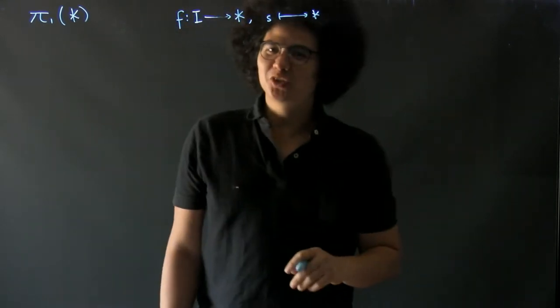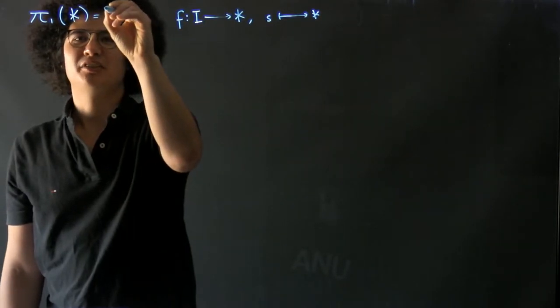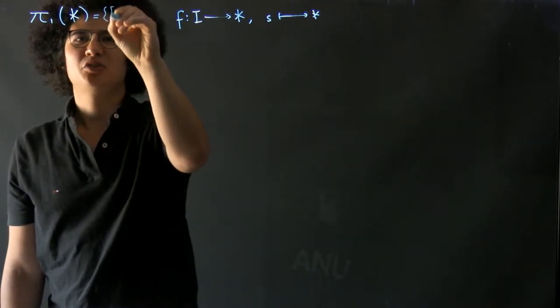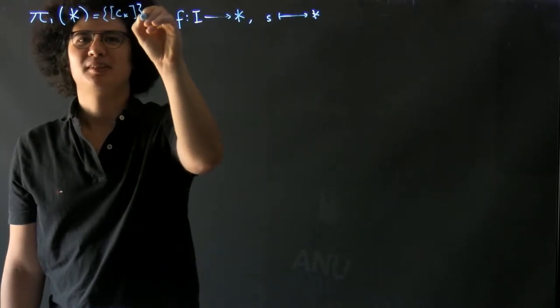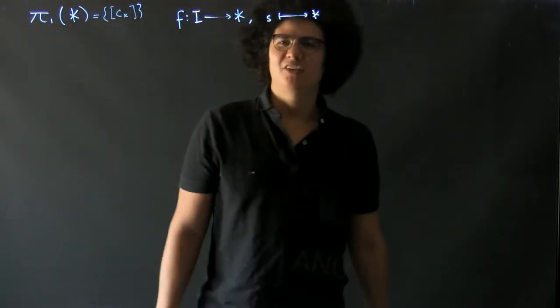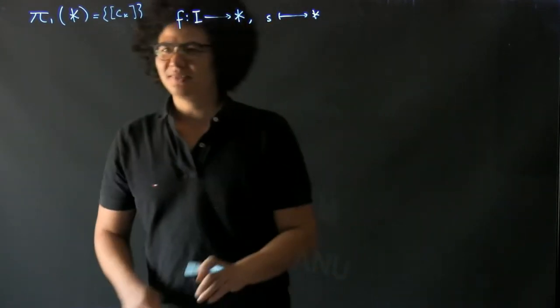This is a constant loop at the point, and so the fundamental group just consists of the constant map at the point, or the homotopy class of constant maps at the point. But there's only one thing in that class.